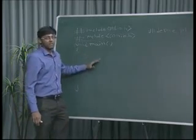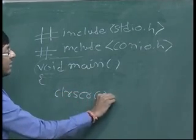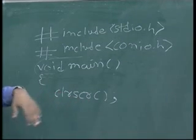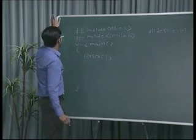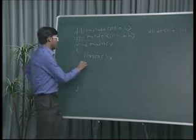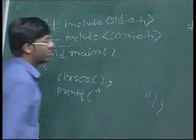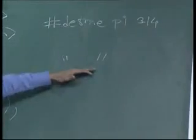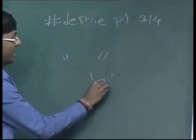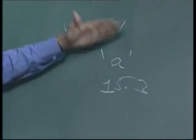If we want to clear the screen, we use clrscr — it clears any previous output in the console from top left to bottom right. After that we use printf to print something. Double quotes are used to print a string. A single character uses single quotes, and integers or floats are written without quotes. So: double quotes for string, single quote for a character, and no quotes for a number.